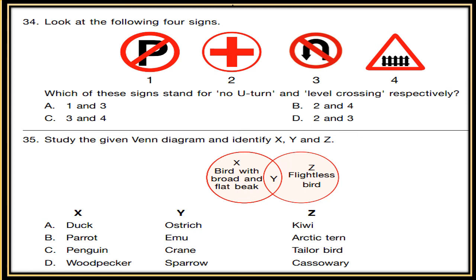Question 35: Study the given band diagram and identify X, Y, and Z. X is a bird with a broad and flat beak. Y is the combination of X and Z — a flightless bird with a broad and flat beak. Identify X, Y, and Z from the options provided.